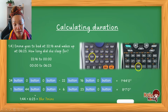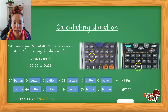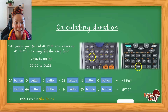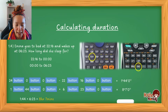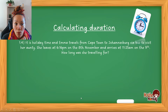I know this seems like a long way compared to just counting on your fingers, but if you master this method you are guaranteed to get all time calculations correct. You can always calculate a time lapse accurately this way.